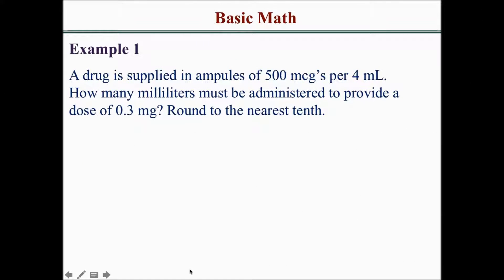This video will show you step-by-step how to solve basic math calculations. Example 1: A drug is supplied in ampules of 500 micrograms per 4 mls. How many mls must be administered to provide a dose of 0.3 milligrams? Round to the nearest tenth.